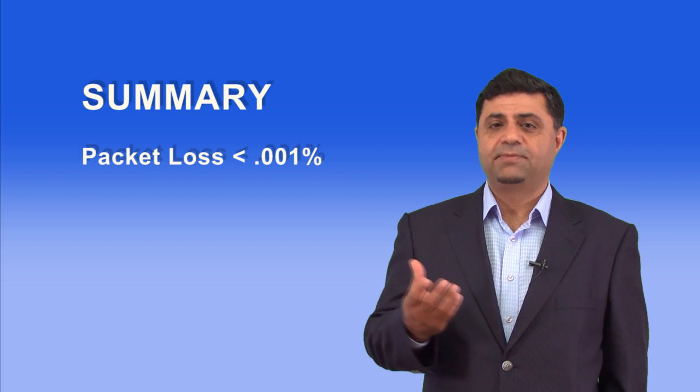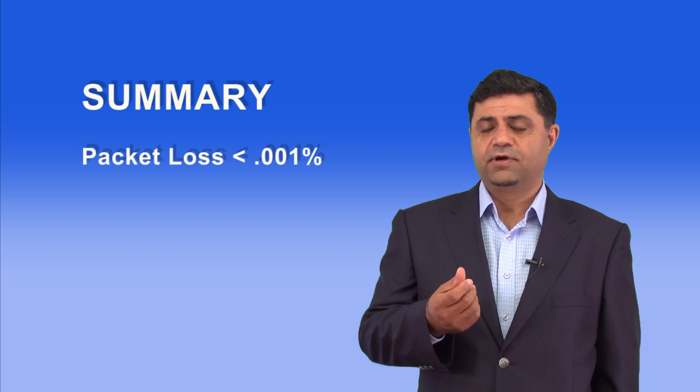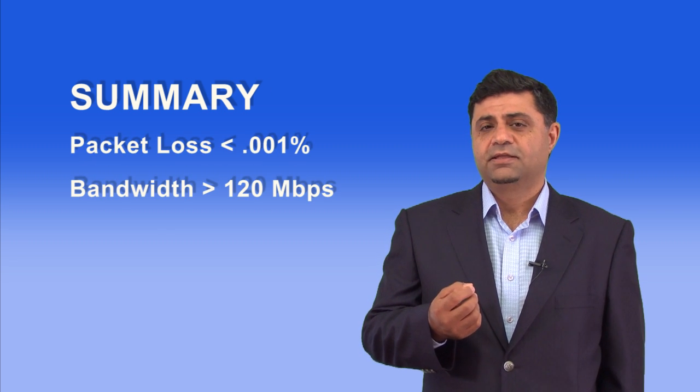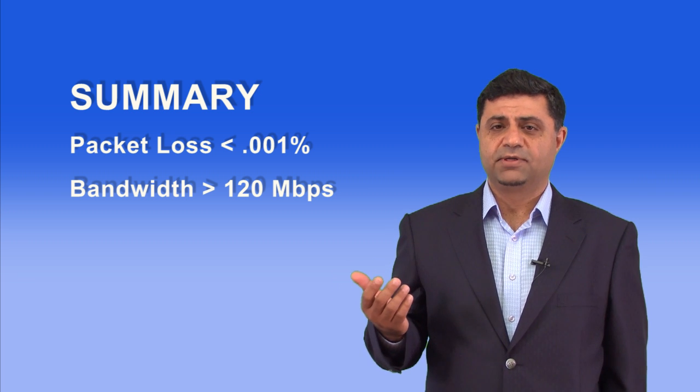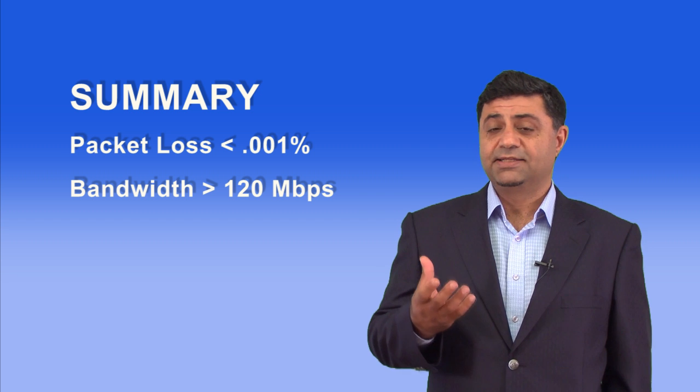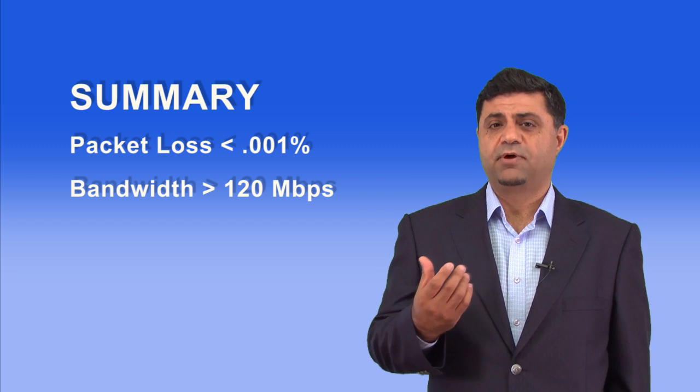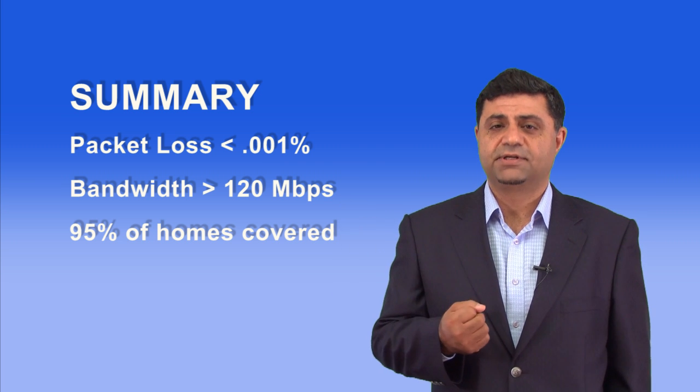We can conclude the following: In order to have high reliability video, we're looking at a packet error rate of 10 to the minus 5, or 0.01%. We also determined that the total bandwidth required inside the home is 120 megabits per second minimum for now and the next 3 to 5 years.